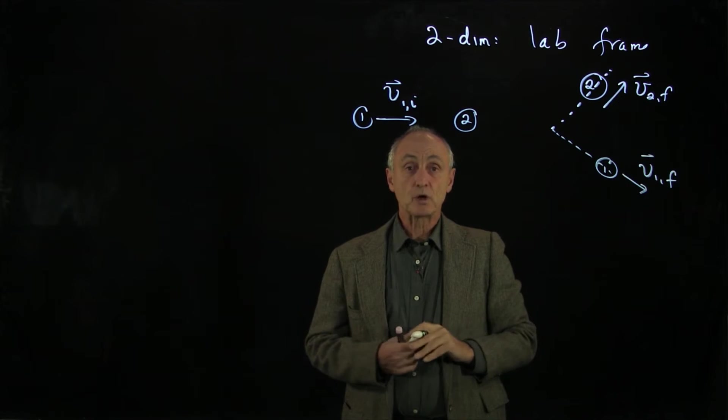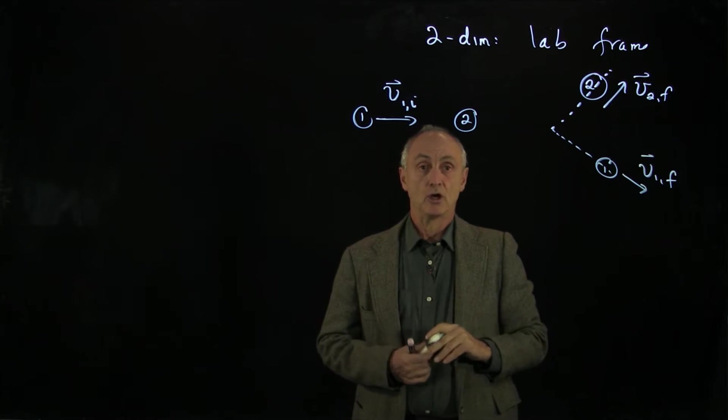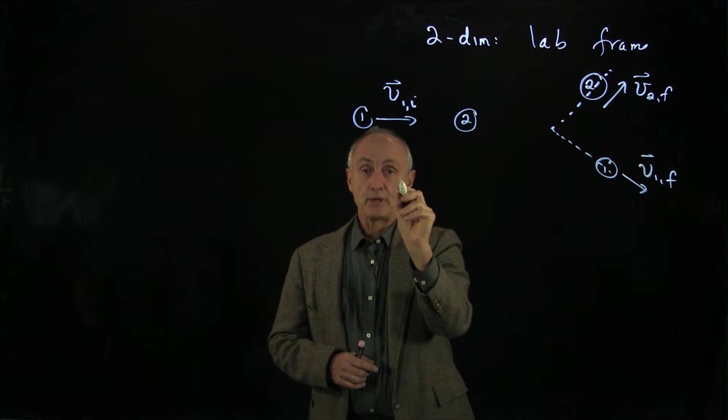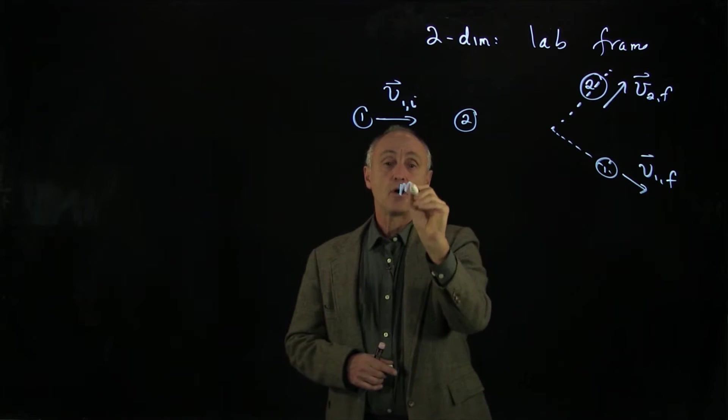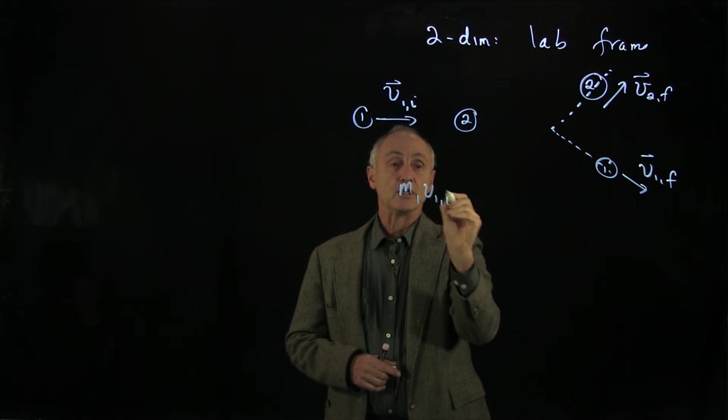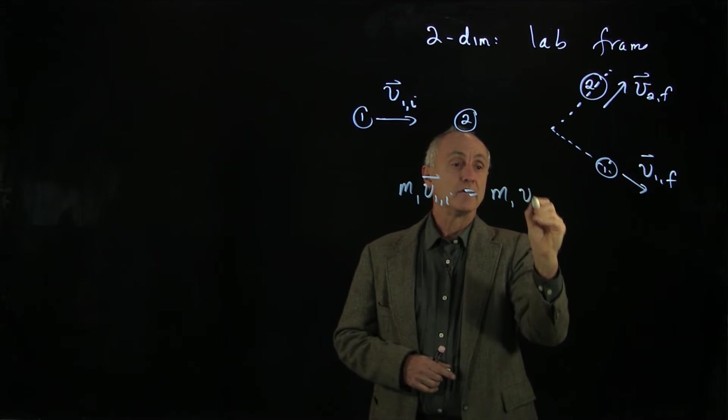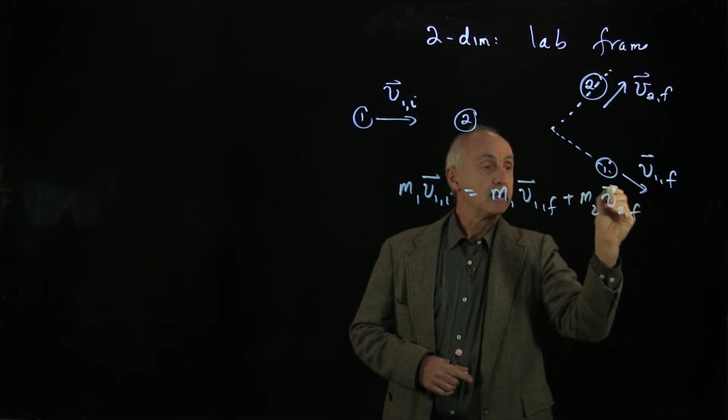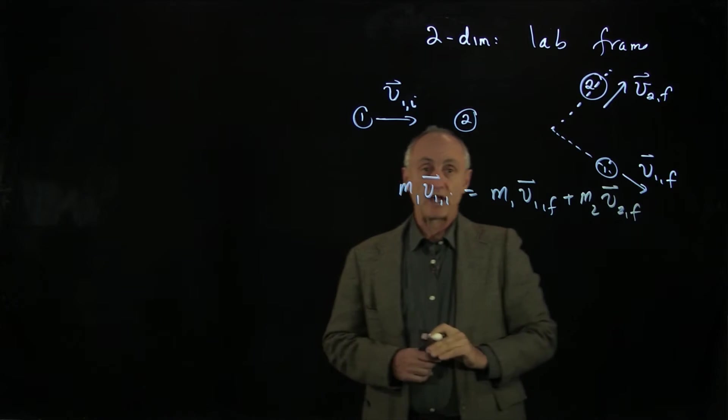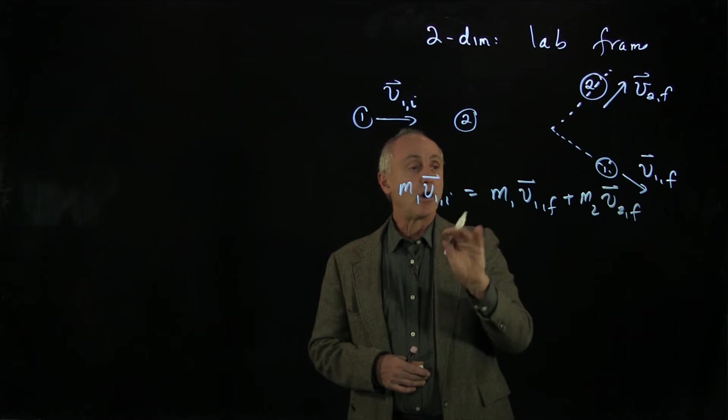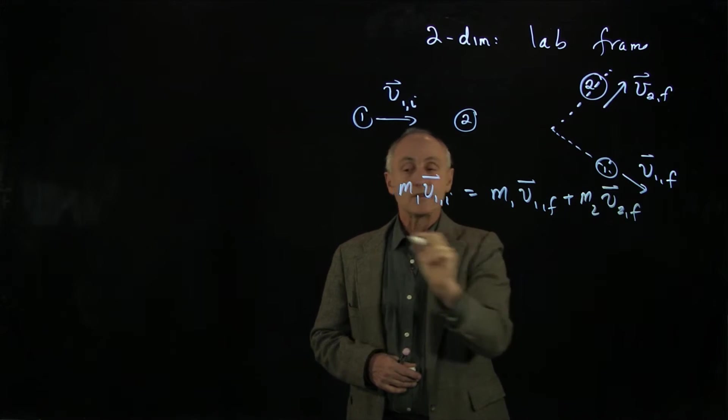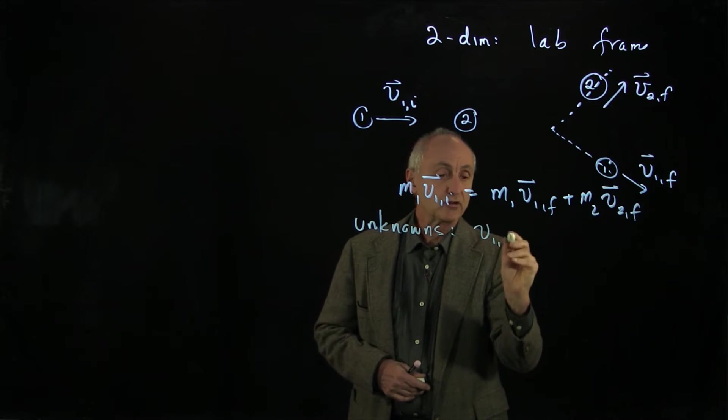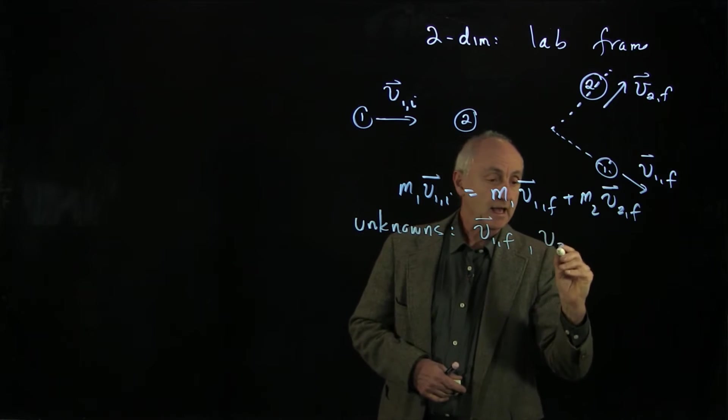we want to ask ourselves first, what quantities are constants of the motion? Well, let's assume no external forces, therefore momentum is constant. And we can write our momentum equation as m1 v1 initial equals m1 v1 final plus m2 v2 final. Now, recall that momentum is a vector. And so what we have here are two, the unknowns here, are our two outcoming vectors, v1 final and v2 final.